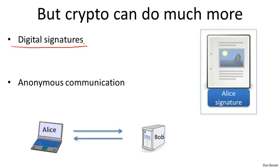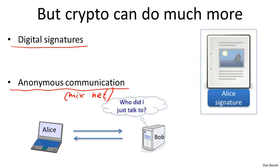Another application of cryptography is anonymous communication. Imagine Alice wants to talk to a chat server Bob — perhaps she wants to talk about a medical condition and wants to do so anonymously so the chat server doesn't know who she is. There's a standard method called a Mixnet that allows Alice to communicate over the public internet with Bob through a sequence of proxies, such that at the end, Bob has no idea who he just talked to, and the proxies themselves don't know that Alice is talking to Bob.